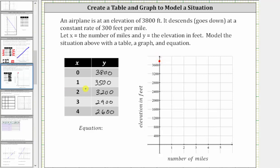The next ordered pair is one comma 3,500. From the origin, we move right one up 3,500, approximately here. Next, we have two comma 3,200. From the origin, right two, up 3,200.